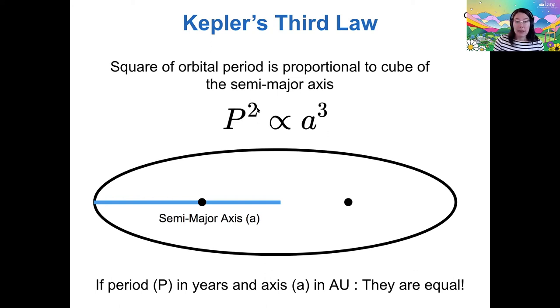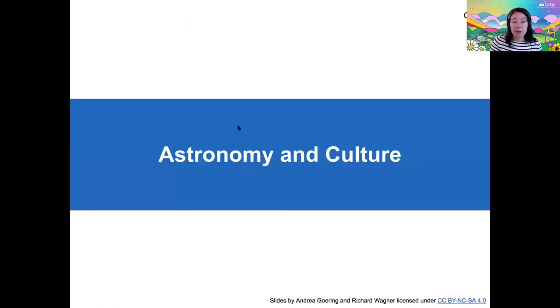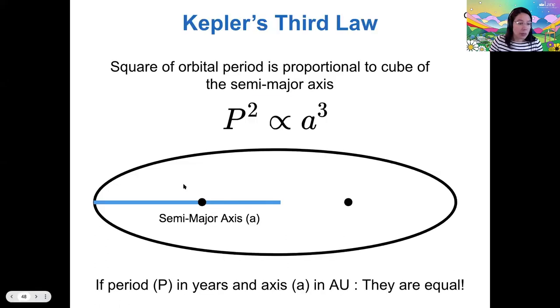the proportionality means that if the semi-major axis goes up, if we have a larger orbit, then the period goes up, it takes longer to make that orbit. So this is the key observation here, larger orbits take longer. And that is the law that governs planetary orbits.